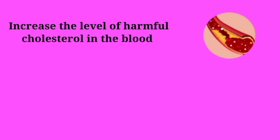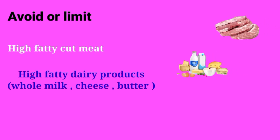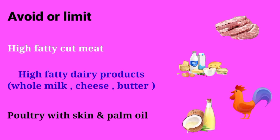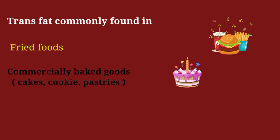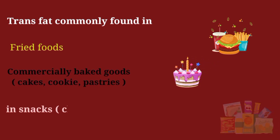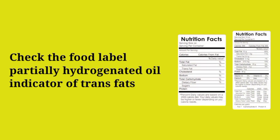Next are saturated and trans fats. These types of fats can increase harmful cholesterol levels in the blood and promote inflammation in the liver. Avoid or limit foods high in saturated fat such as fatty cuts of meat, high-fat dairy products like whole milk, cheese, and butter, poultry with skin, and palm oil. Trans fats are commonly found in fried foods, commercially baked goods like cakes, cookies, and pastries, and snacks like chips and crackers. Check food labels for partially hydrogenated oils as an indicator of trans fats.